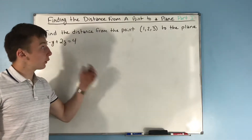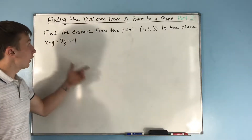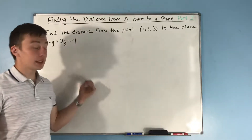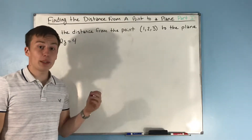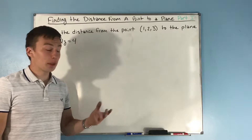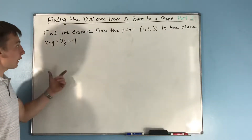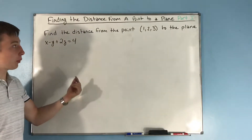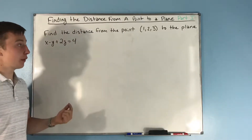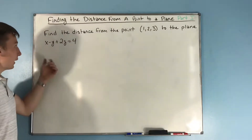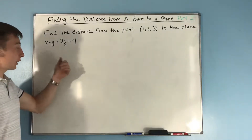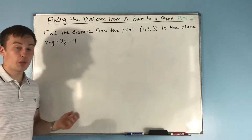This video is going to be part one of finding the distance from a point to a plane. We want to find the distance from the point (1, 2, 3) to the plane x minus y plus 2z equals 4.